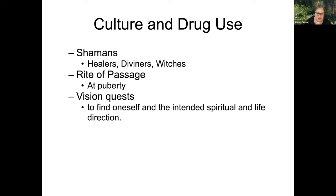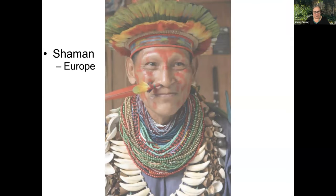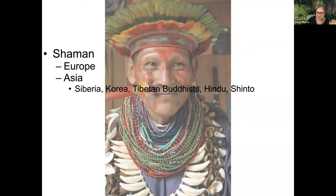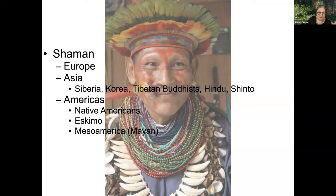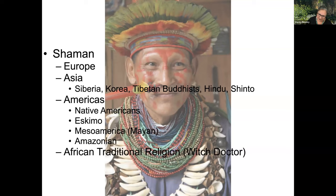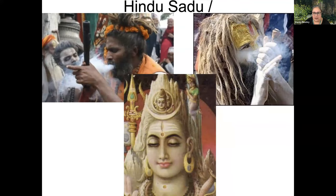At puberty, there's a rite of passage and a vision quest to find oneself, intended as part of their spiritual life to help find direction. Shamans are found in Europe and Asia — Siberia, Korea, Tibetan Buddhists, Hindu, and Shinto. In the Americas, we find Native Americans considered shamans, as well as Eskimos and Inuits, and in Mesoamerica the Mayan and Amazonian groups. In African traditional religions, we've seen witch doctors and neo-paganism — the revival of pre-Christian beliefs and old ways.